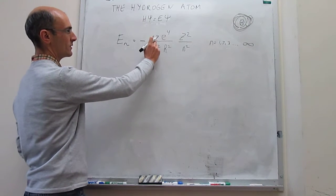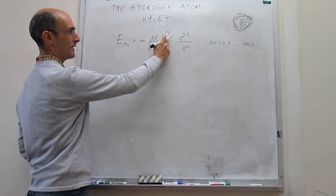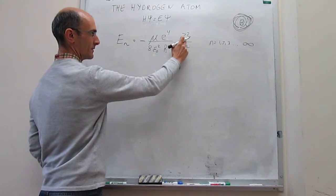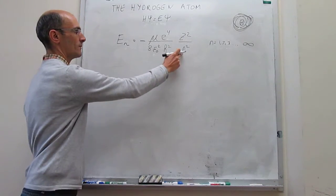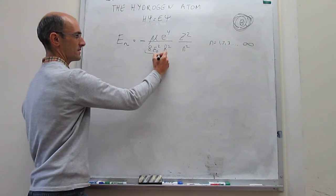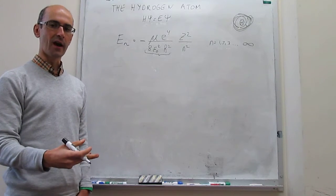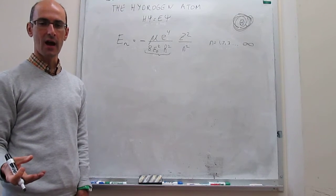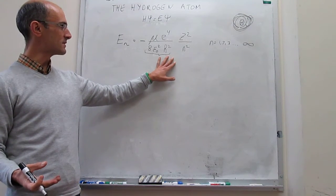All of these terms are known: the reduced mass, the atomic charge or electronic charge to the 4th, permittivity for vacuum, and Planck's constant. Z is simply the number of protons in the nucleus — the atomic number — divided by the quantum number N. It turns out that all of these things are actually constants that don't change when you go from one hydrogenic atom to another. So if you go from H to helium-plus, both of those are hydrogenic atoms, and the energies of their electrons can be captured by this expression.